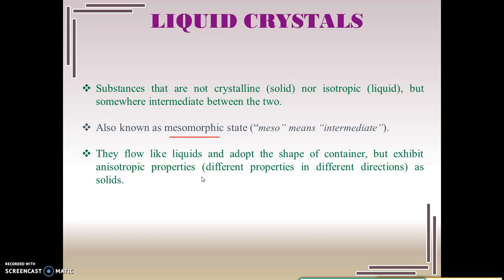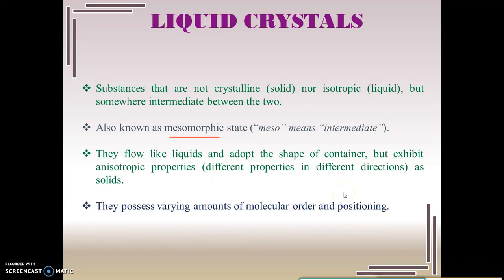Anisotropic properties means different properties in different directions. Liquid crystals also possess varying amounts of molecular order and positioning — the position of the molecules and the order in which they are arranged also varies.